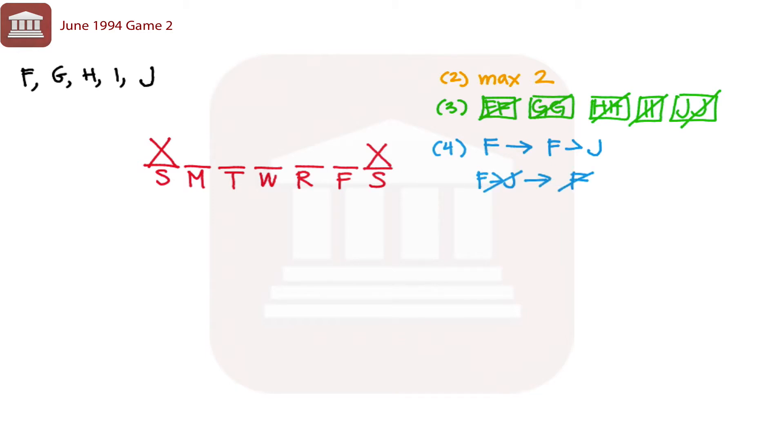So what this essentially means is that if J is on Monday, then F can't work. Because if J is on Monday and F was working, F would then have to be somewhere after it, and that goes against rule number four.